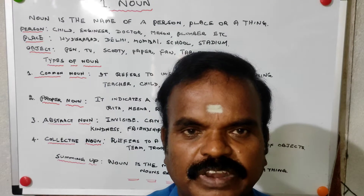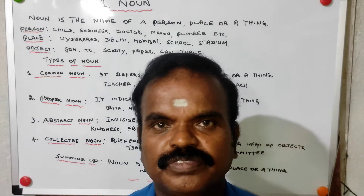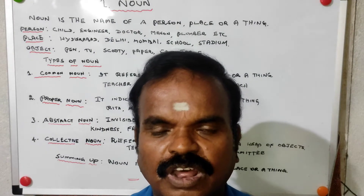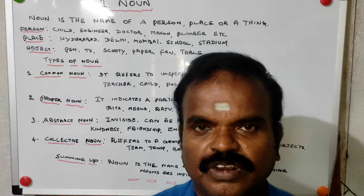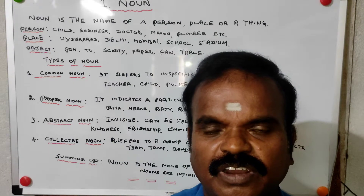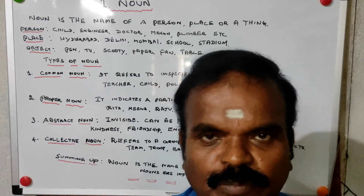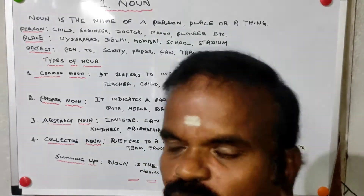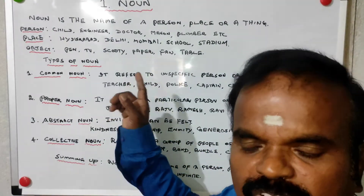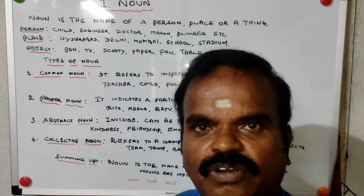Welcome to the channel Navodhya Master. In this video we are discussing about nouns. Noun is the first item in the parts of speech. We have already seen the 8 parts of speech, and number 1 is noun. What is noun? Noun is the name of a person, place, or an object.